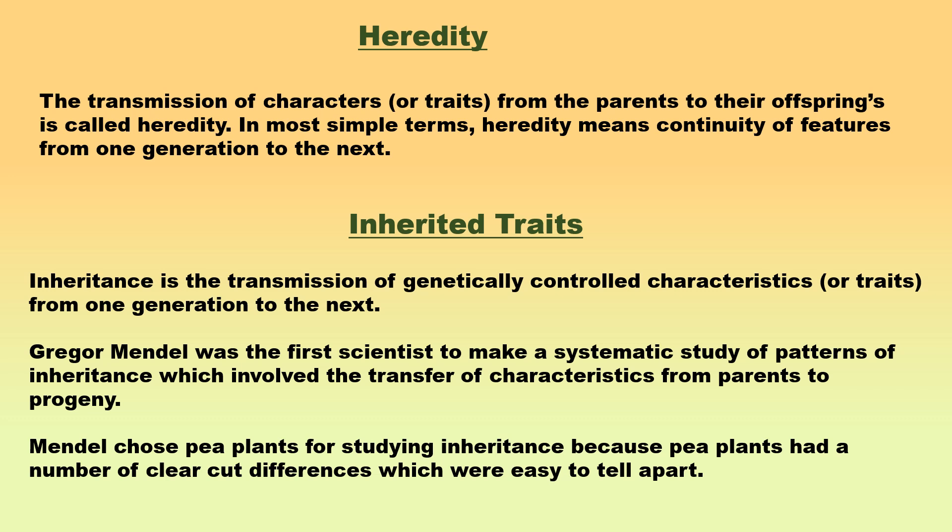The hereditary information is present in the sex cells of the parents. Thus, gametes constitute the link between one generation and the next, and pass on the paternal (father's) and maternal (mother's) characters or traits to the offspring. This relation that continues to exist between successive generations is referred to as heredity.